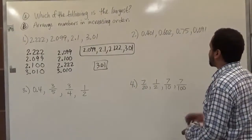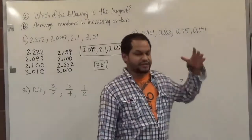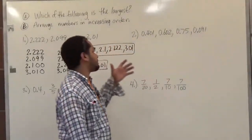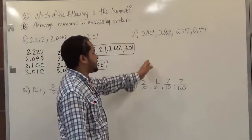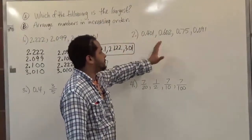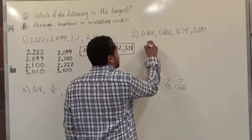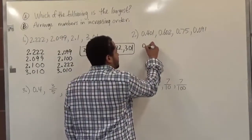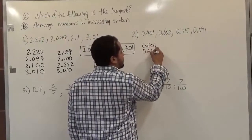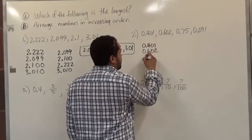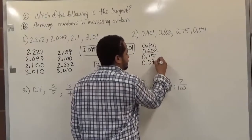We're going to use the same technique for this next set because it's also a set of decimals. Whenever we have decimal numbers, all we have to do is add the placeholder and arrange the numbers one on top of the other, and see which number looks bigger by ignoring the decimal point. So we're going to stack these numbers up: 0.401, 0.602, 0.75, and 0.091.